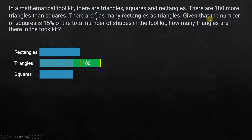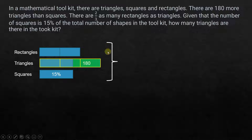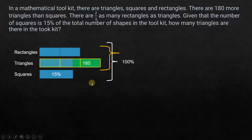Given that the number of squares is 15% of the total number of shapes in the toolkit, the total — rectangles, triangles, and squares together — is 100%. Squares represent 15%, so the triangles and rectangles together make up 100% minus 15%, which is 85%.